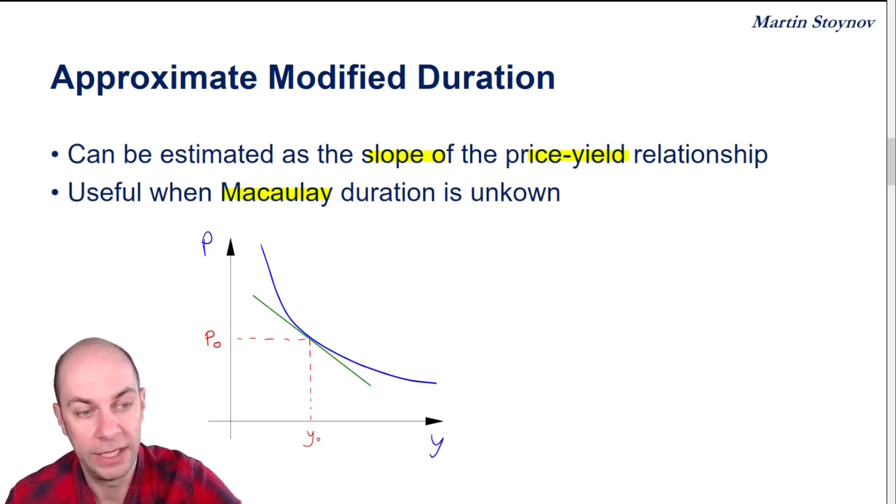So let's say I were to shock yields down and let's denote this as Y-, so the yield when yields were shocked down.